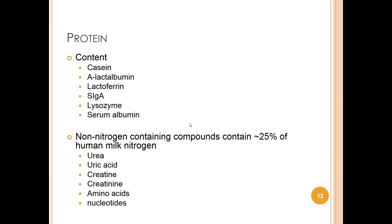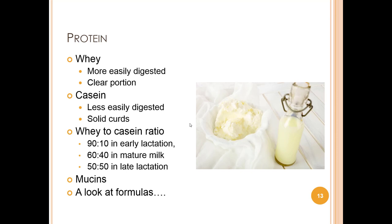The proteins of human milk are divided into two factions — the whey fraction and the casein fraction — each comprised of a remarkable array of specific proteins and peptides. The most abundant proteins are casein, alpha-lactalbumin, lactoferrin, secretory immunoglobulin A, lysozyme, and serum albumin. Non-protein nitrogen-containing compounds including urea, uric acid, creatinine, creatine, amino acids, and nucleotides comprise around 25% of human milk nitrogen. Whey is the clear portion of milk protein and casein is the more solid curd component — the curds and whey of the nursery rhyme.